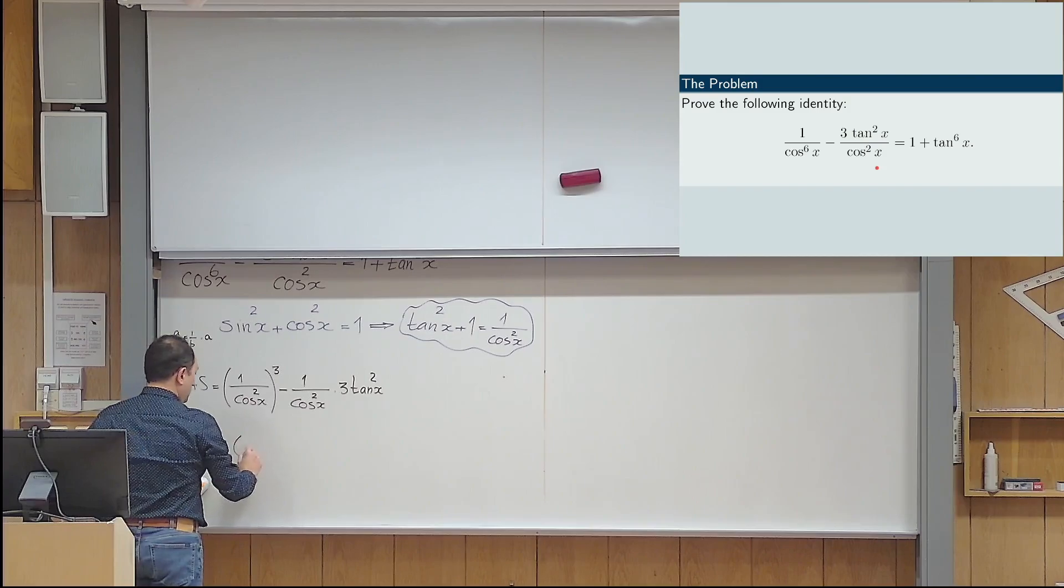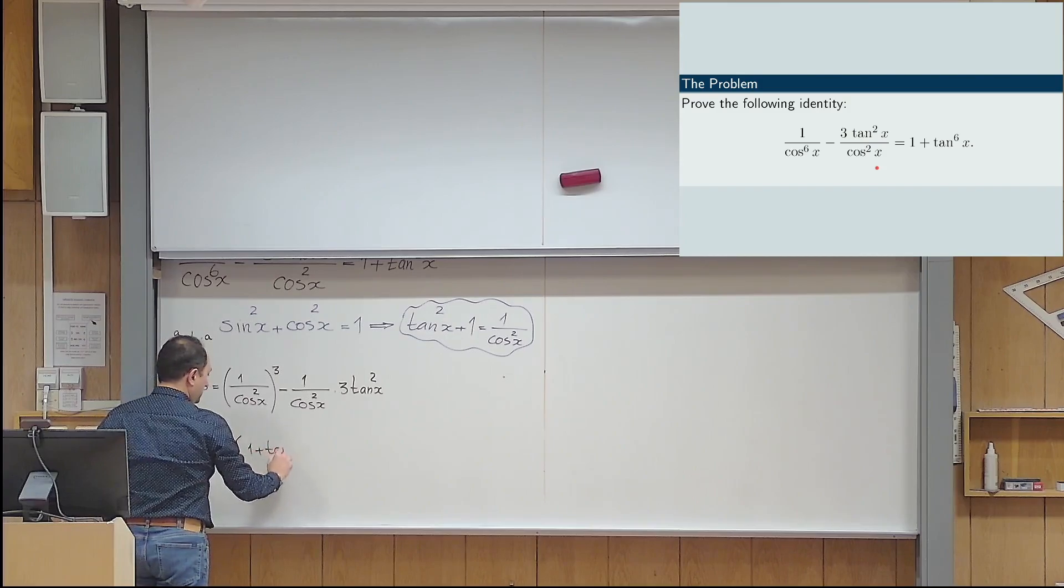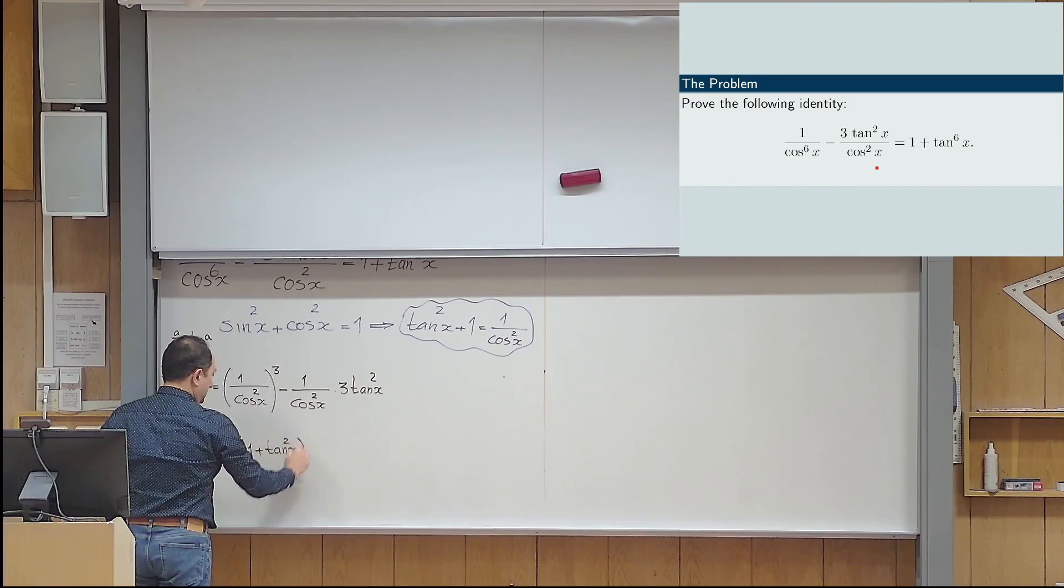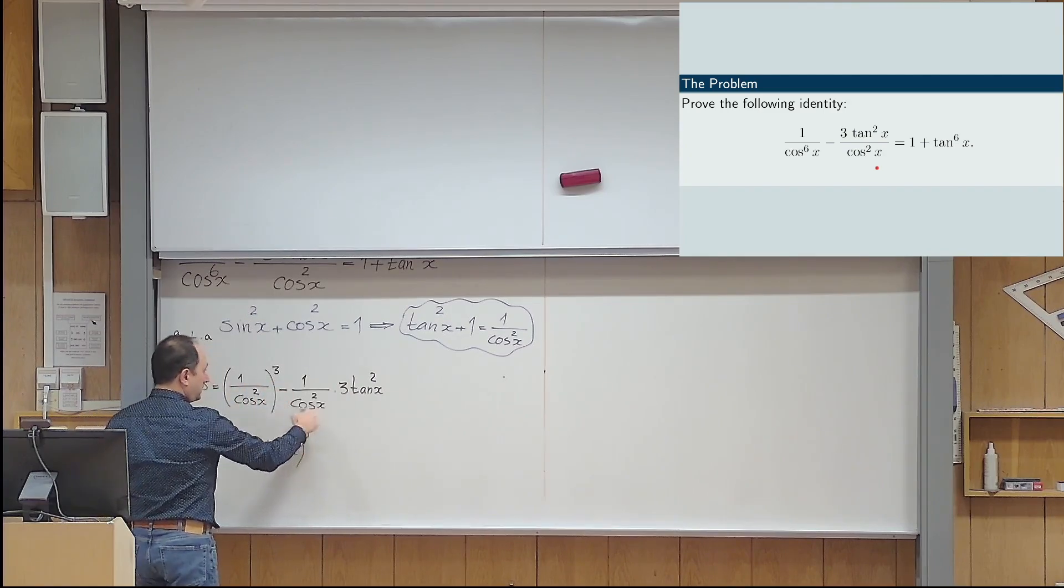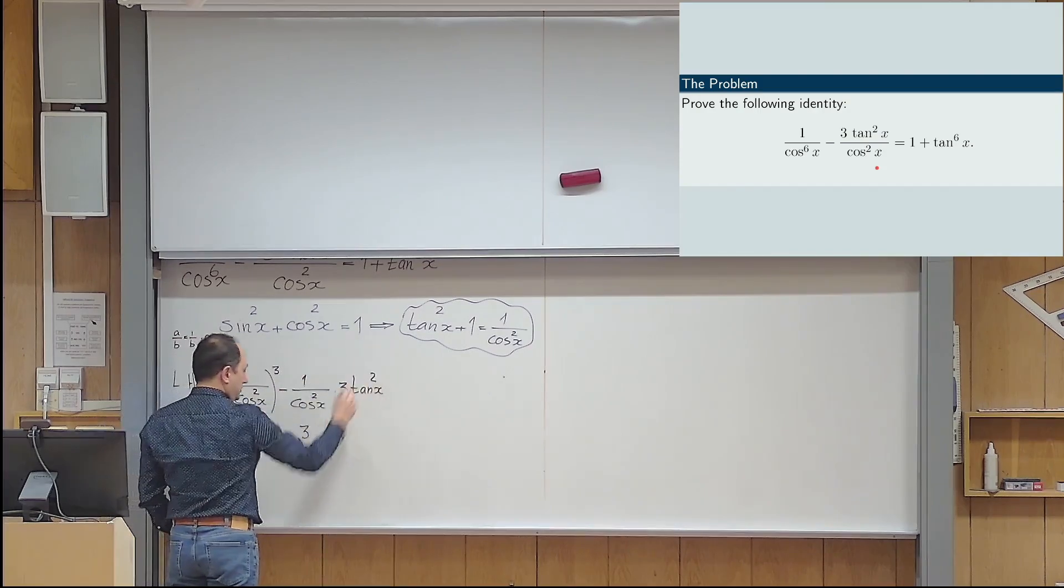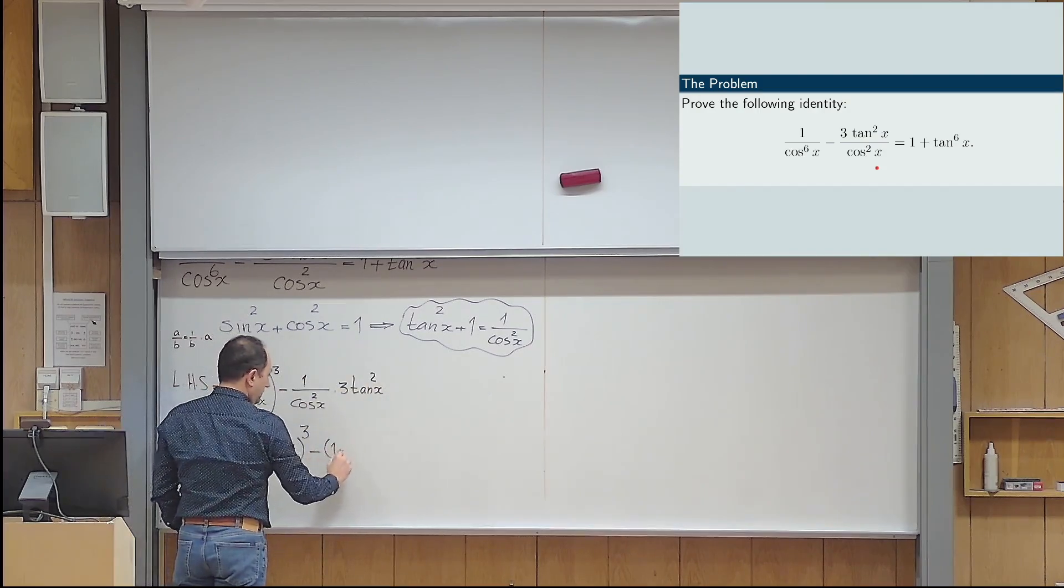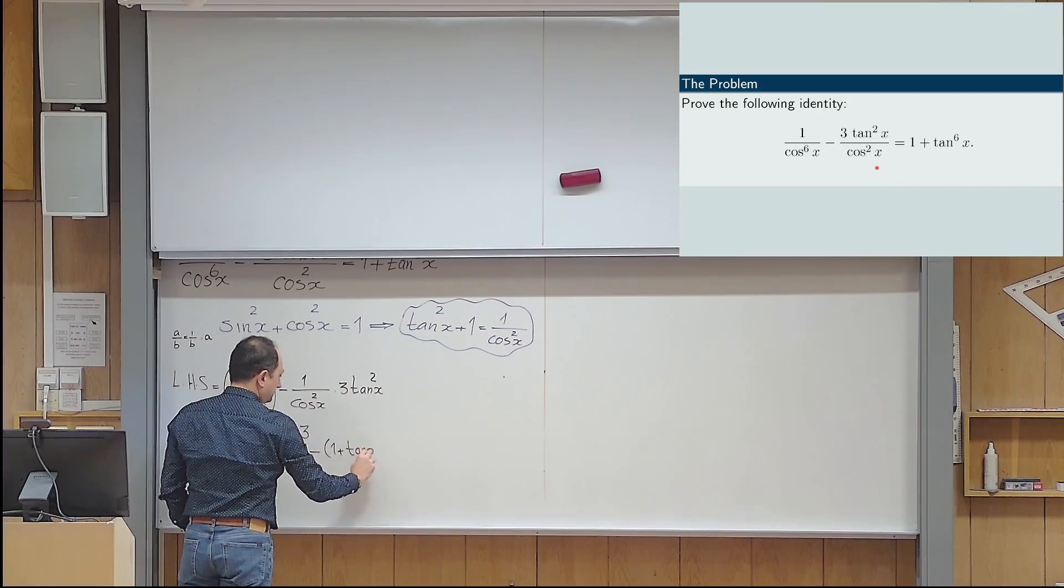Instead of 1 over cosine x squared here and there, I use that formula. So, this becomes 1 plus tan x squared instead of 1 over cosine x squared and then to power 3. And then instead of that 1, I just write the same thing. So, 1 plus tan x squared.